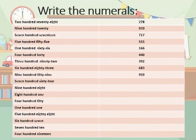Coming to the exercise — write the numerals. Number names are given and you have to write the numbers. First is 278 — that is 278. Next is 920, in numbers 9, 2, 0. Next is 717 — that is 717.